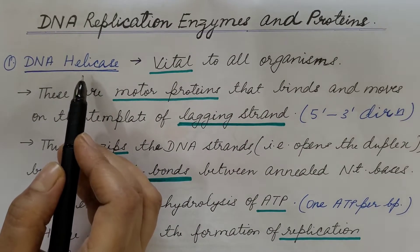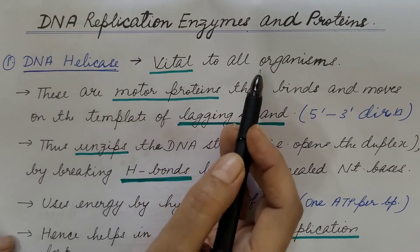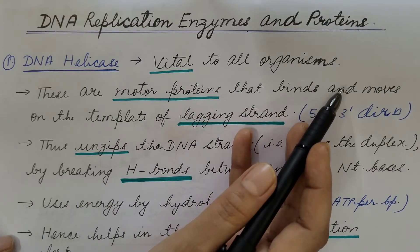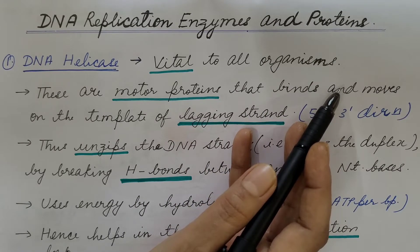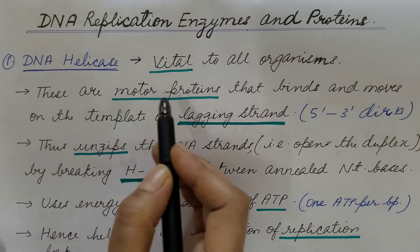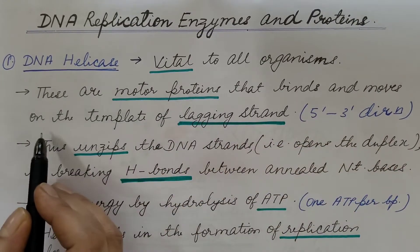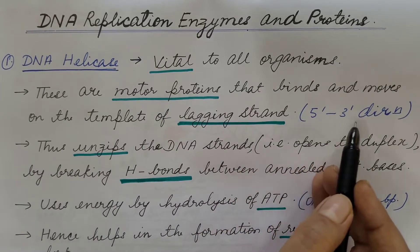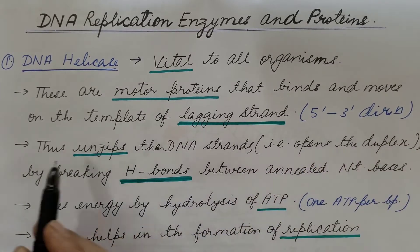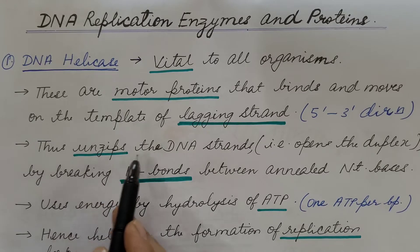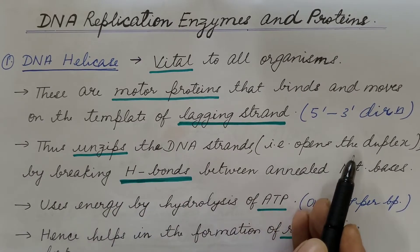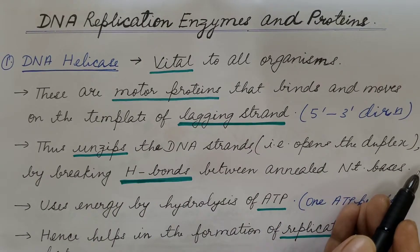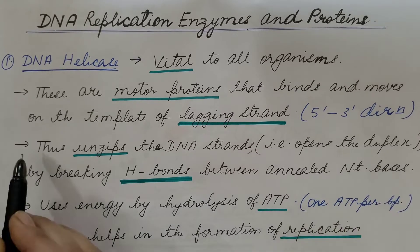First of all, DNA helicase. This enzyme is vital to all organisms. These are motor proteins that bind and move on the template of the lagging strand, that is in the 5' to 3' direction. It unzips the DNA strands or opens up the duplex, helping in the melting of the two strands.